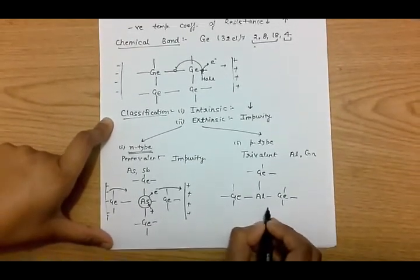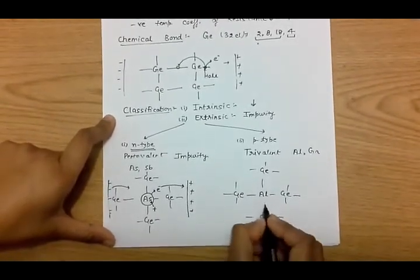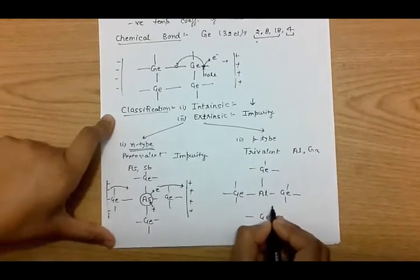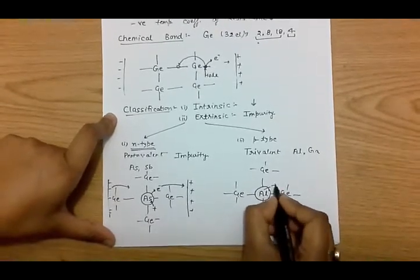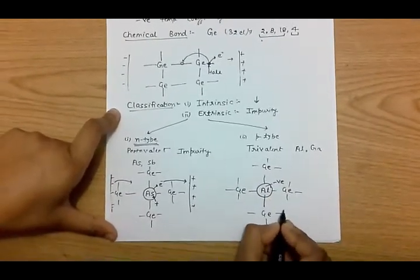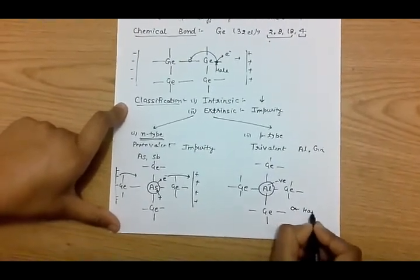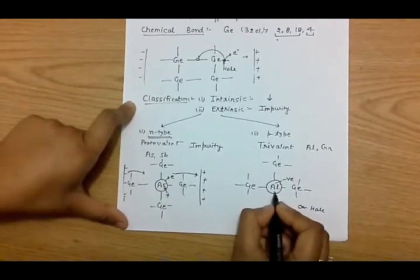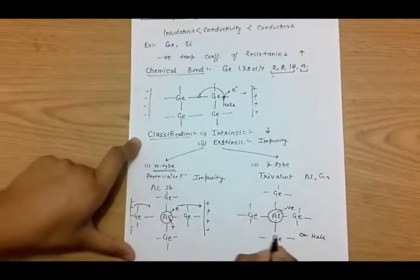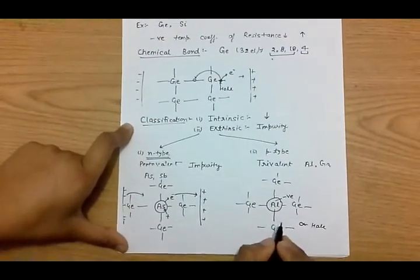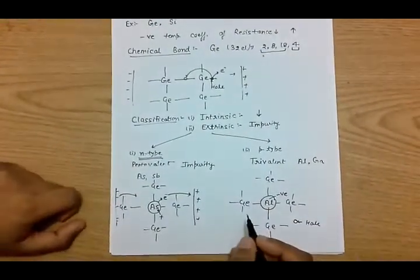Since germanium has a tendency to form the fourth bond as well, it steals one electron from a nearby atom, resulting in the formation of a covalent bond. As a result, the aluminium becomes a negatively charged ion and the place from where the electron was stolen becomes a hole. The number of holes generated equals the number of negatively charged impurity ions formed, so P-type semiconductors are also electrically neutral.